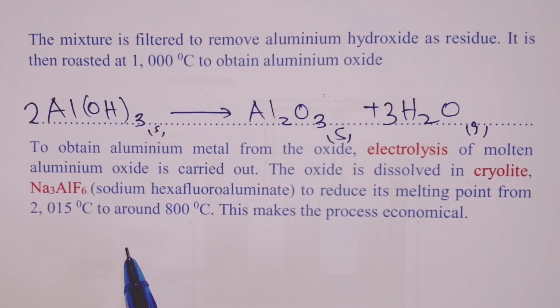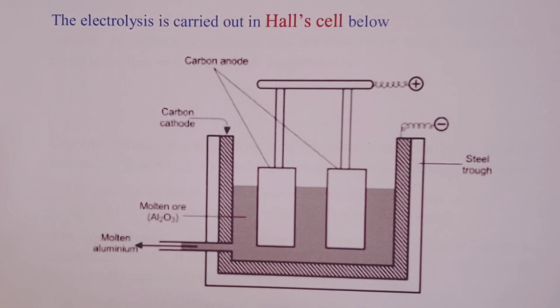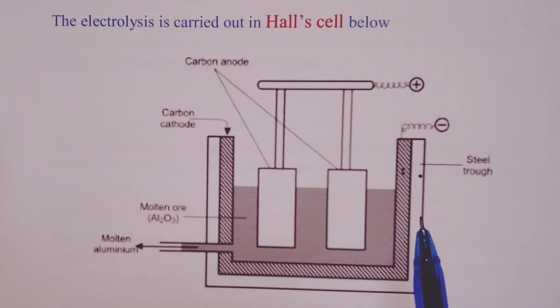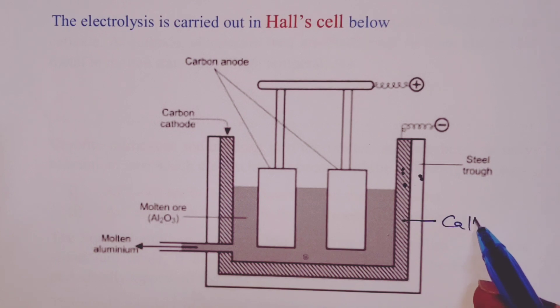Dear learners, let's now have a look at the components of the Hall's cell. Here we have a diagrammatic representation of the Hall's cell. The cell is a cylindrical steel tank that is lined on the inside with graphite. This would act as the cathode. At cathode, aluminum ions are discharged in molten state due to high temperatures.